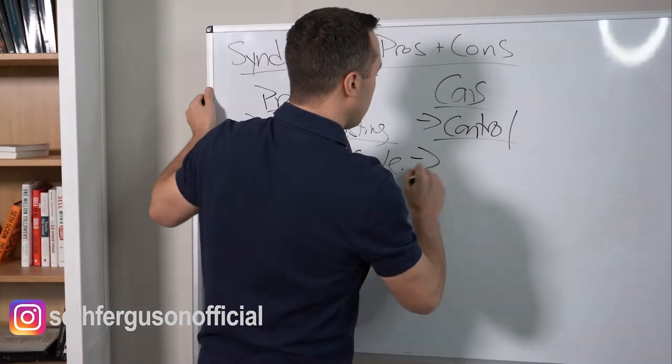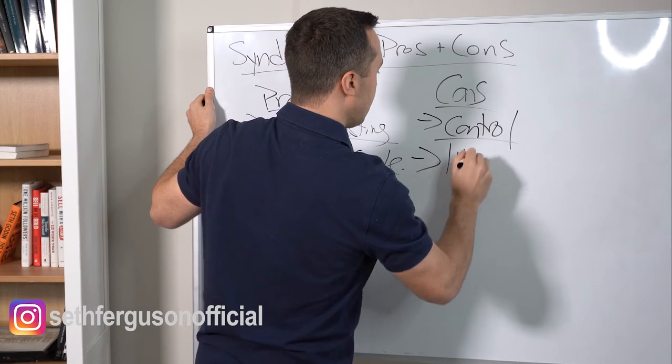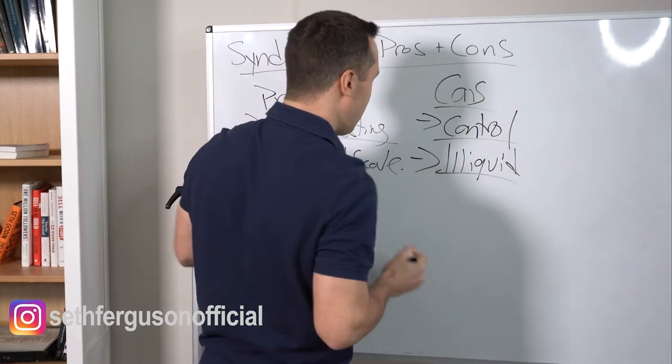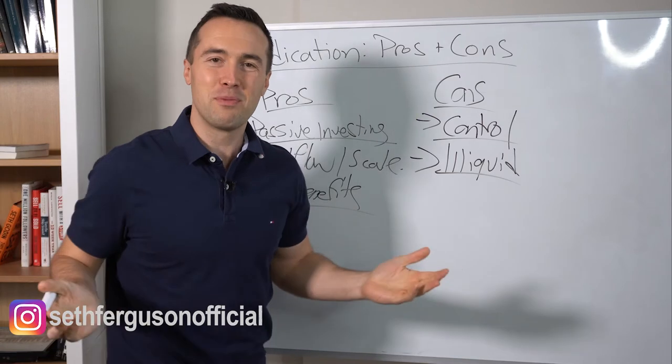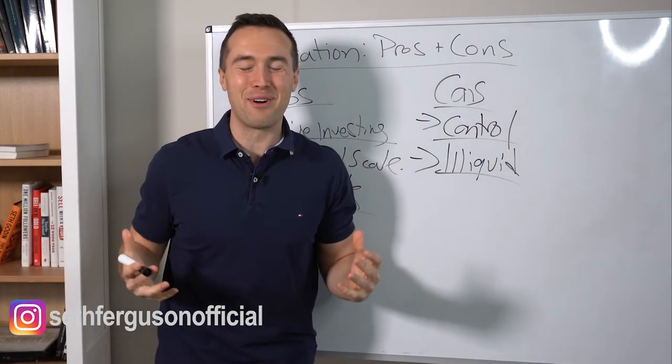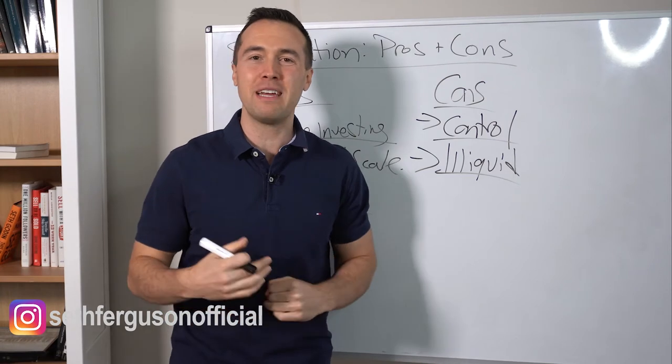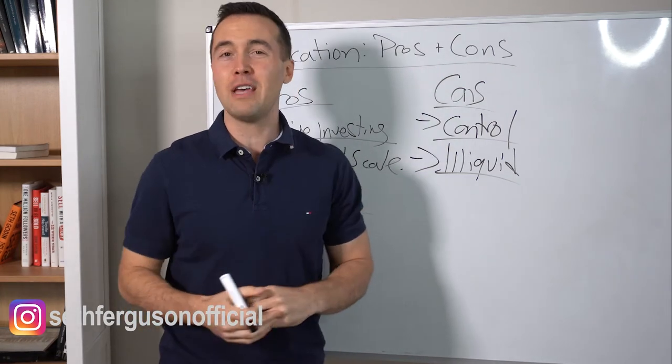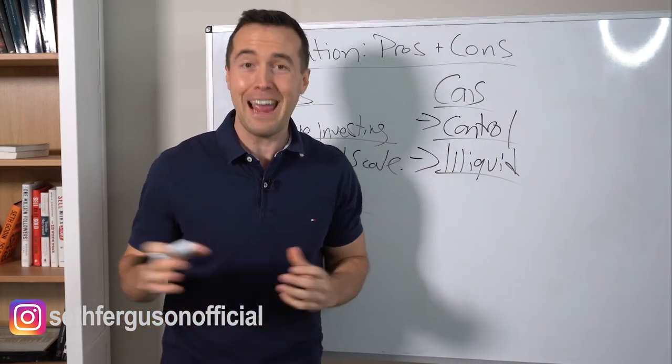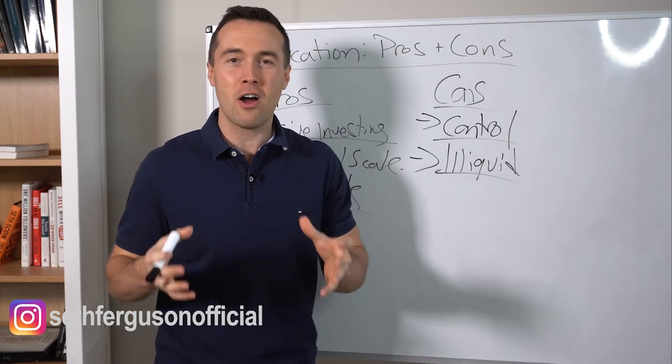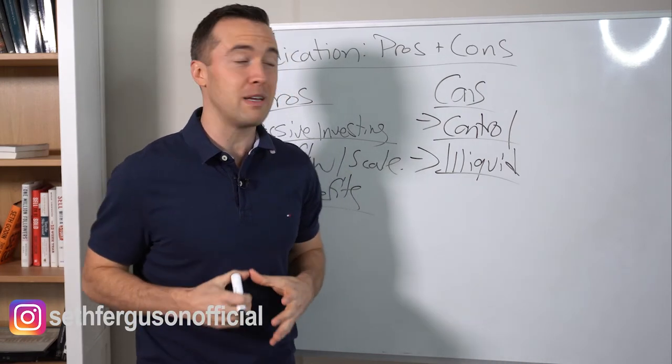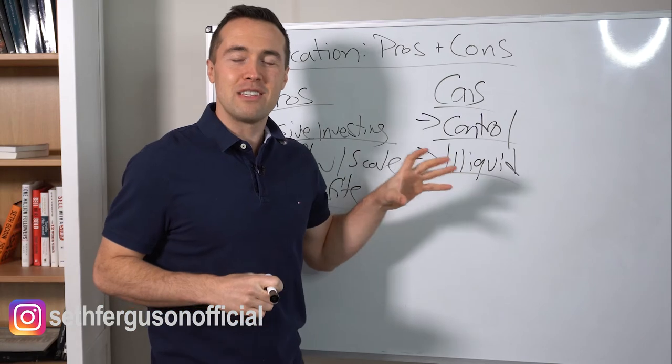Con number two is real estate is illiquid. And what I mean by illiquid is you can't sell it tomorrow. You can't get out of the deal tomorrow. With syndications, depending on the type of project, you could be invested in for three years, five years, seven years, 10 years. It's really dependent on the project and what has to be done. Real estate is not liquid.